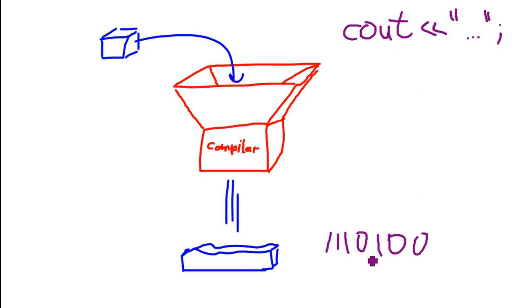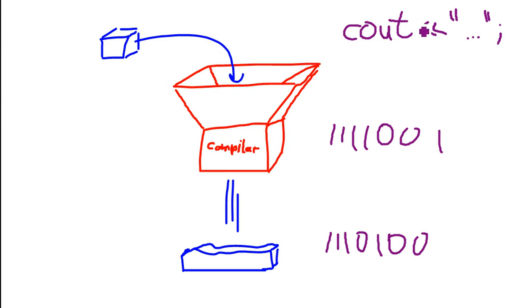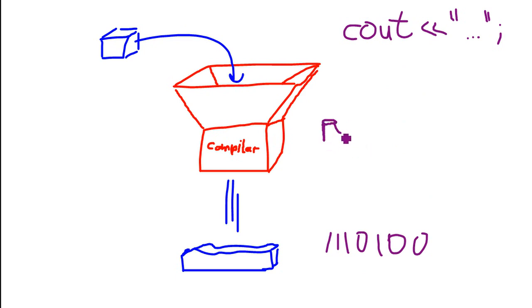This logic is also written in some code, right? It might be that the compiler is written in machine code itself — so some programmer typed in all zeros and ones to get a compiler that creates machine code out of C++ code. It might also be the case that the compiler itself is written in Python. And this is a very important construct in this explanation.